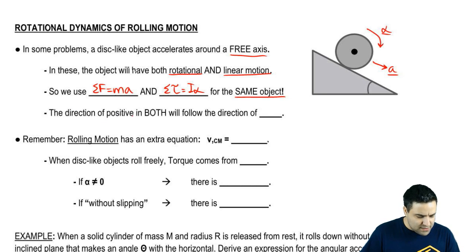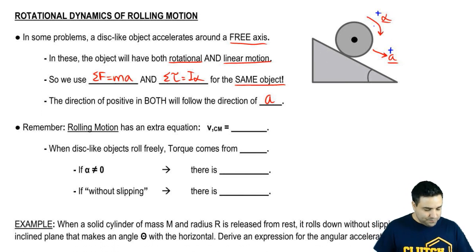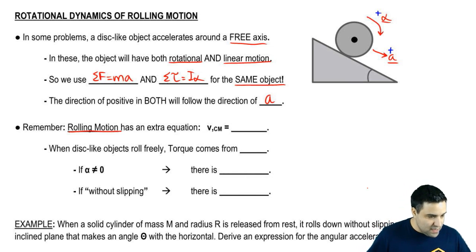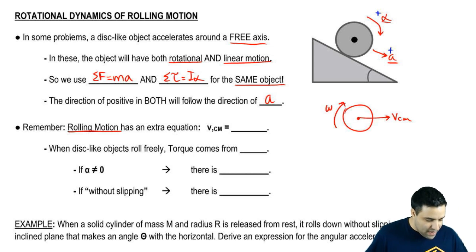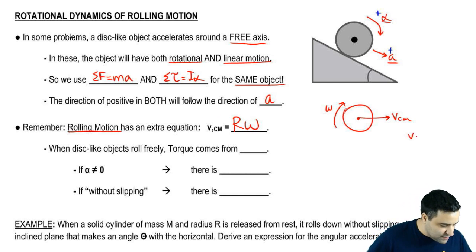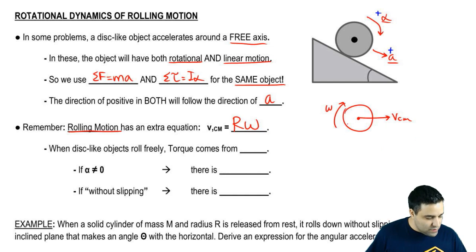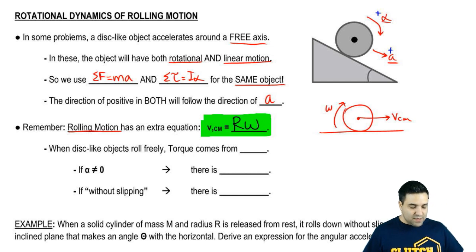Remember, the direction of positive in both equations will follow the direction of A and alpha — so this direction is positive and this direction is positive. Remember also that in rolling motion there's an extra equation: the velocity at the center of mass, VCM, is tied to your omega by VCM equals R omega — and it's always big R because it always has to do with the radius of the object. This extra equation is possible because you have rolling motion.